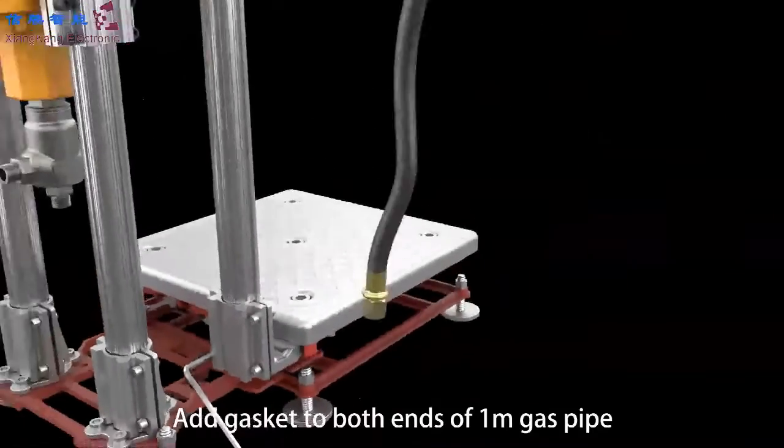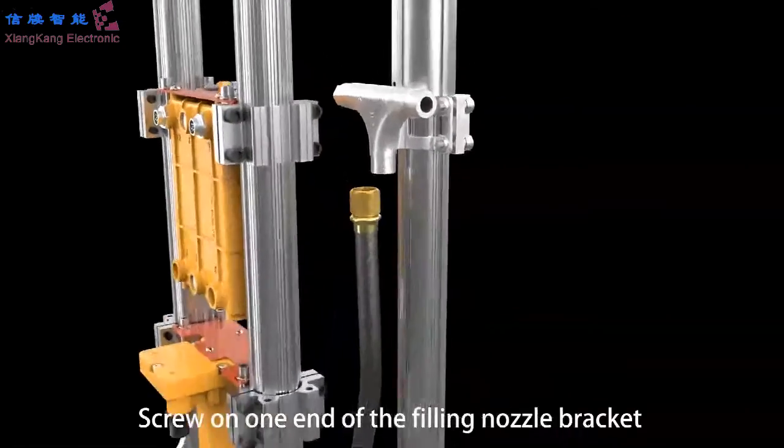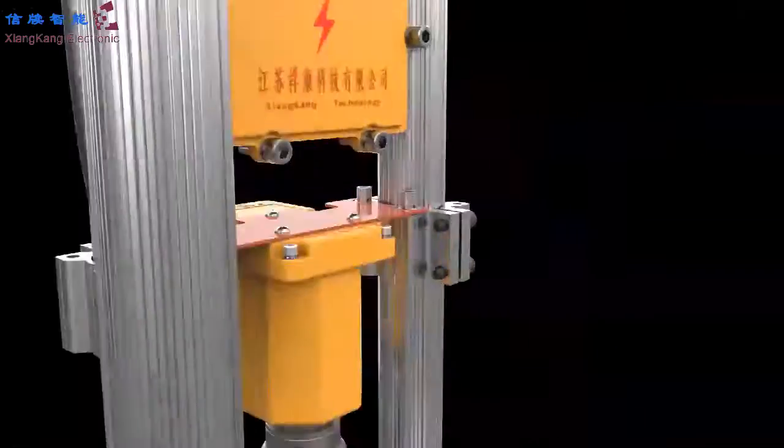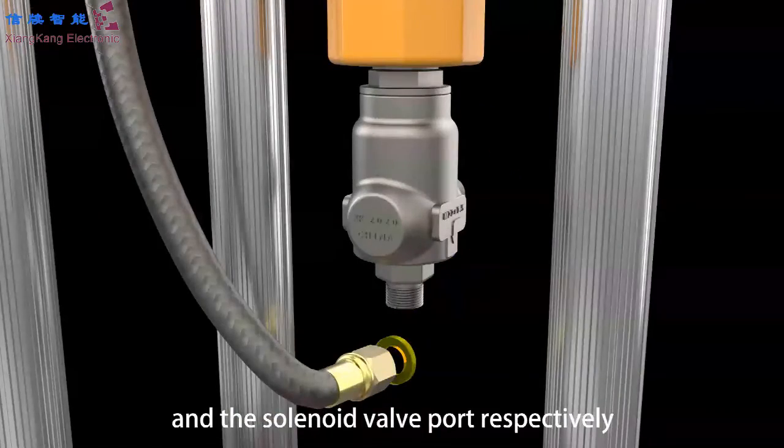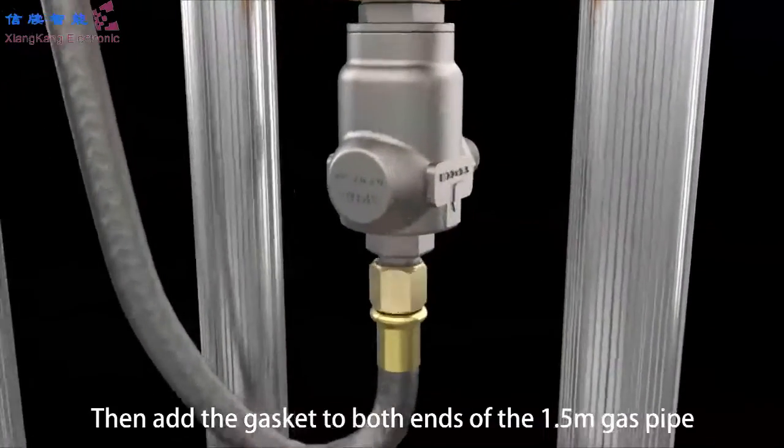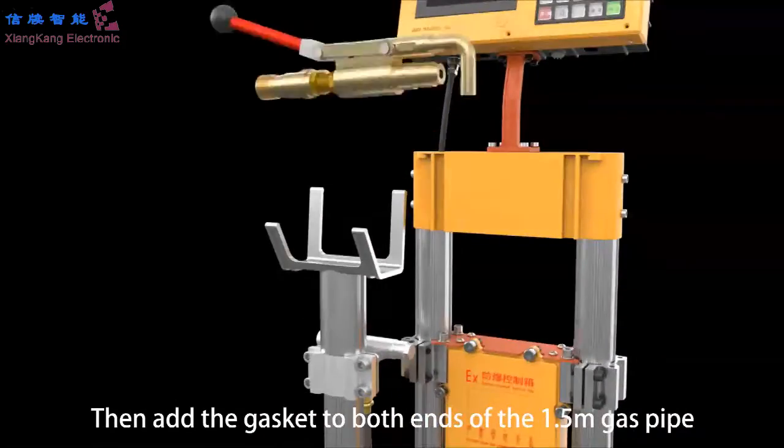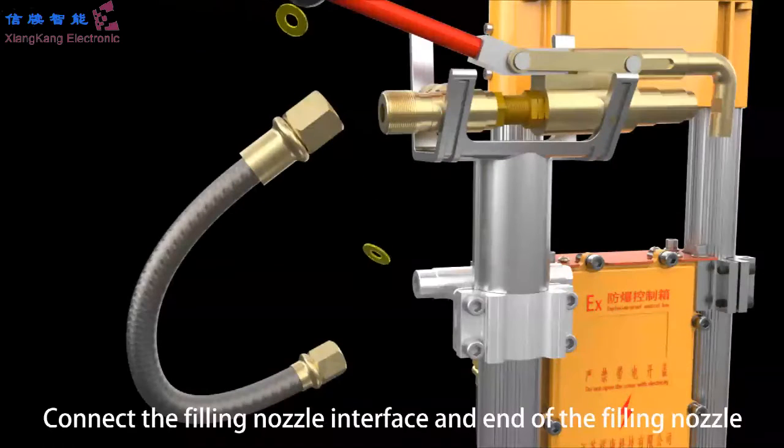Add gasket to both ends of 1-meter gas pipe. Screw on one end of the filling nozzle bracket and the solenoid valve port respectively. Then add the gasket to both ends of the 1.5-meter gas pipe. Connect the filling nozzle interface and end of the filling nozzle.